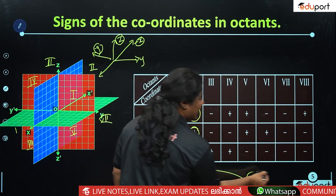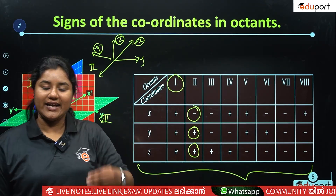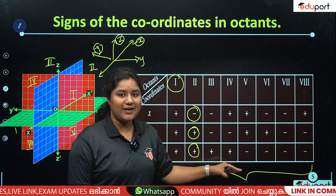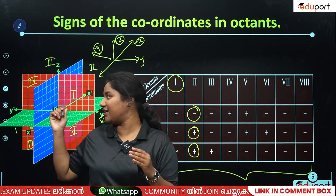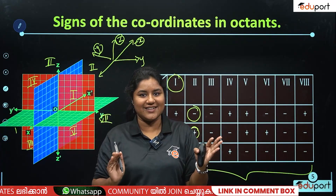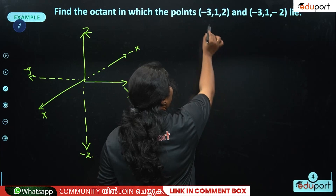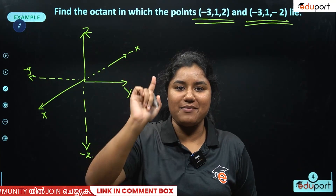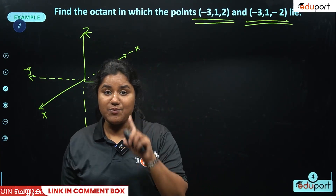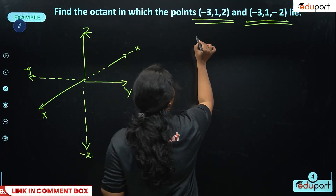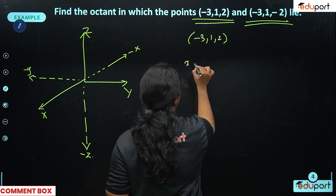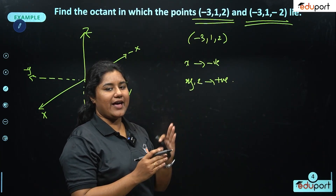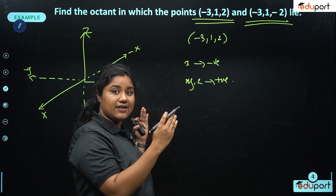Now, for the point (-3, 1, 2): here x is negative, and the other two (y and z) are positive. So z is positive, y is positive, x is negative — that corresponds to the second octant. The second octant has x negative, y and z positive.